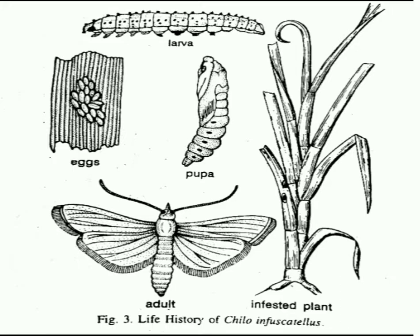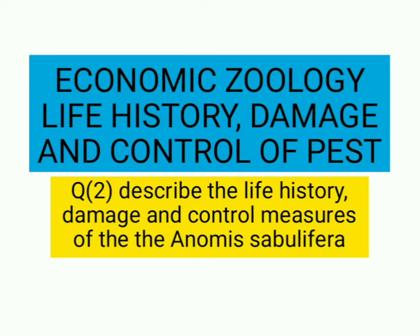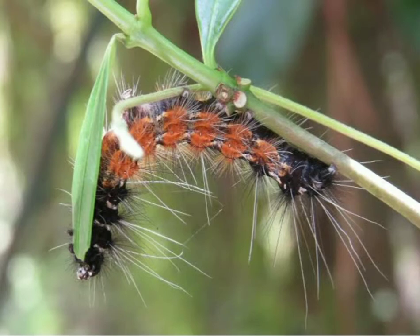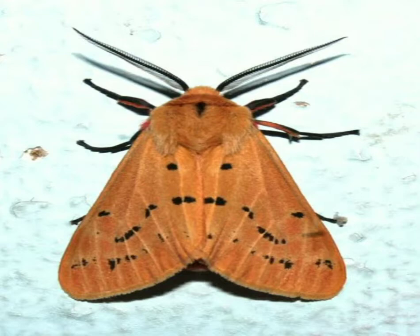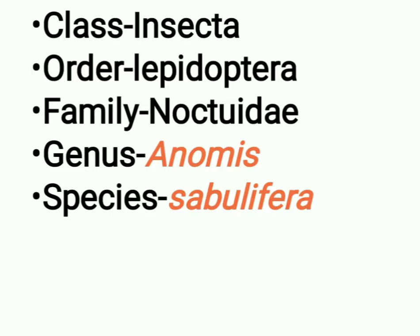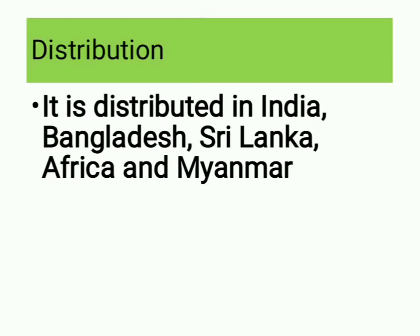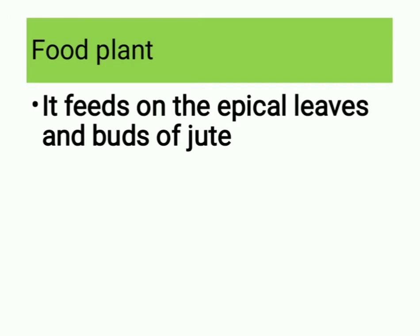Our second question is: describe the life history, damage and control measures of Anomis sablifera. This is the picture of the Anomis sablifera worm and moth. The class of Anomis sablifera is Insecta, order Lepidoptera, family Noctuidae, genus Anomis, species sablifera. Distribution: it is distributed in India, Bangladesh, Sri Lanka, Africa and Myanmar.